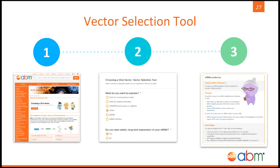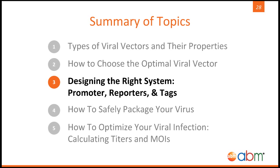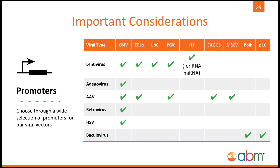The next topic we will be discussing is how to design the right system for your virus. These pertain to additional attributes you can modify, add, or remove into your viral vector to completely customize it for what you want. The first consideration is promoter type. We have many promoters to choose from when ordering a viral vector. We have the most choice for our lentiviral and AAV vectors, as they are our most popular. When choosing the best promoter, you have to take into consideration what cell lines you are using.